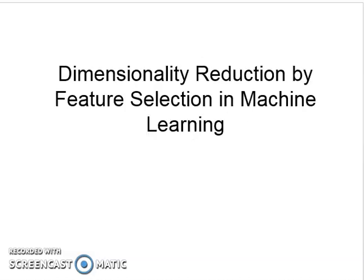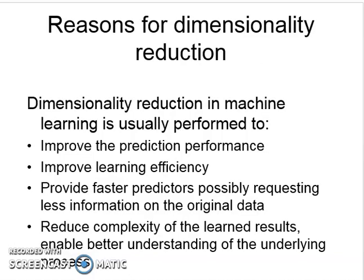Dimensionality reduction by feature selection in machine learning — how to select features affects dimensionality reduction. The reasons for dimensionality reduction, as covered in our previous video, include: to improve prediction performance, to improve learning efficiency, to enable faster prediction by requesting the least information, and to reduce the complexity of the learned model.